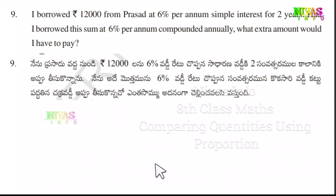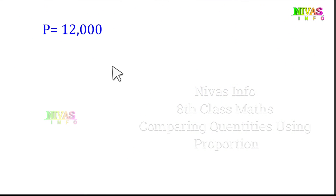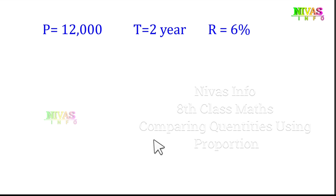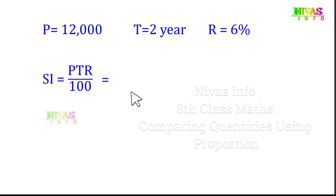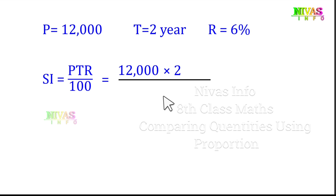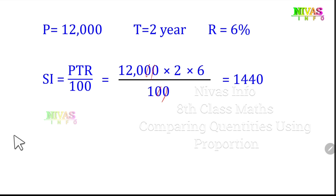First, we will find out the simple interest. The principal amount is 12,000. Time period is 2 years. Rate of interest is 6%. Simple interest is equal to PTR by 100. P value is 12,000, T value is 2, rate of interest is 6. After cancelling the zeros, 120 into 2 into 6 gives us 1,440. So the simple interest is 1,440.